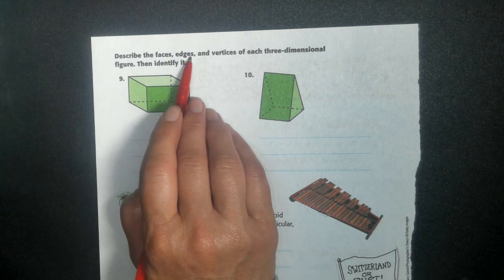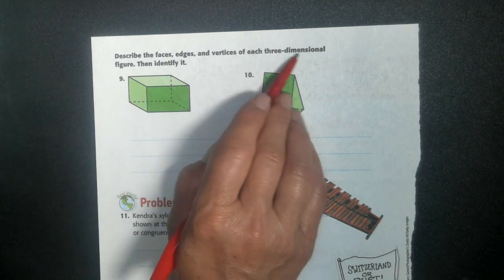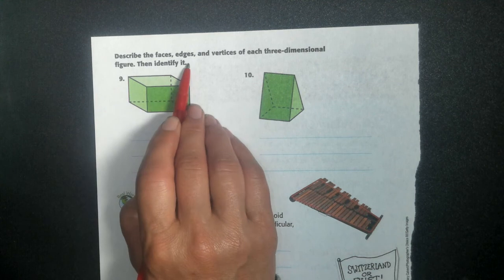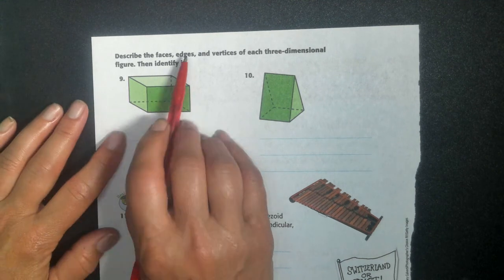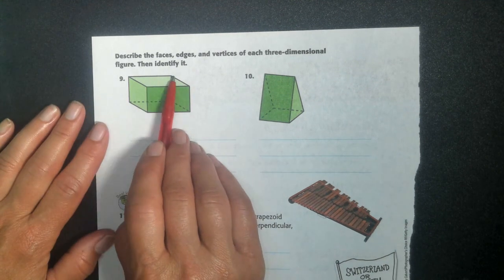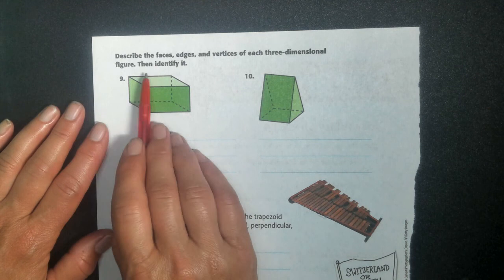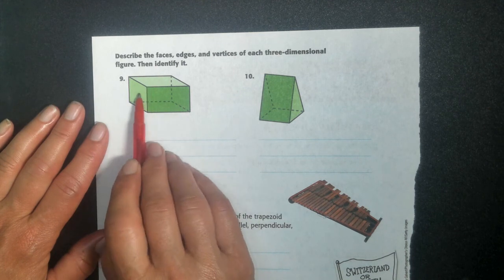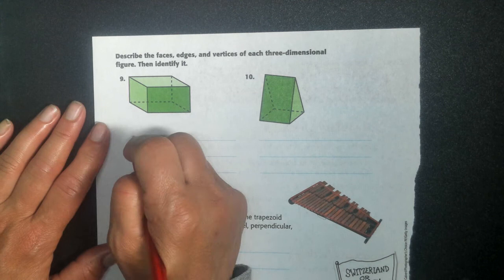Describe the faces, edge, and vertices of each three-dimensional figure, then identify it. So let's just say how many it has. So this one has one, two, the bottom one, three, and the one on the back, four, one on one side, five, and one six faces.